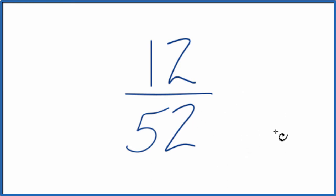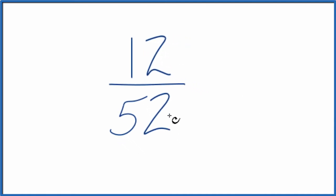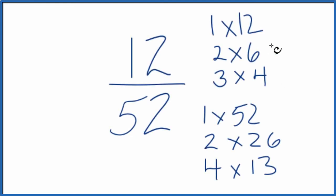To do that, we need to find a common factor, something that goes into 12 and 52. So these are the factors of 12 and 52. When I look at the factors of 12 and then 52, I'm looking for the greatest common factor, and it looks like the greatest common factor is going to be four.